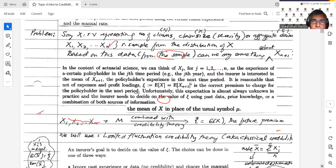So now let's move on. In the context of actuarial science, we can think of Xj, j going from 1 to n, as the experience of a certain policyholder in the jth time period (e.g., the jth year - first year, second year up to the nth year). And the insurer is interested in the mean of X n+1, the policyholder's experience in the next time period. That's exactly what I just said - you have values up to Xn, we want to predict the next value which is X n+1.